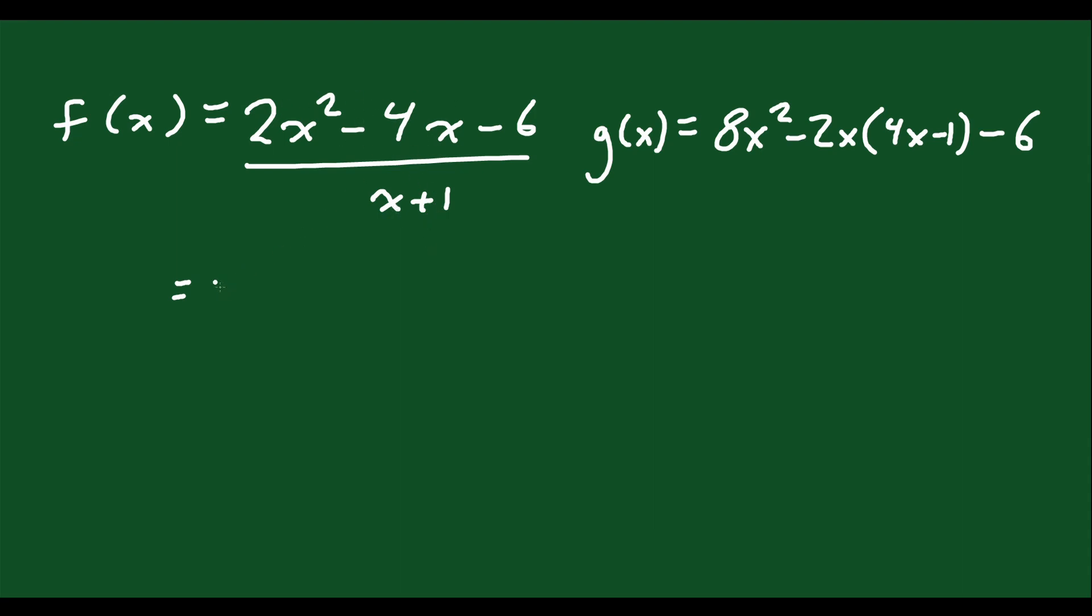You can factor out a 2 on the top, and you'd be left with x squared minus 2x minus 3 all over x plus 1. And then you can factor the simple trinomial on top. Two numbers that multiply to negative 3 and add to negative 2, I think x minus 3 and x plus 1 would work, divided by x plus 1.